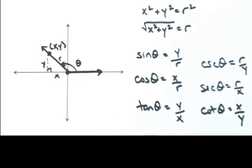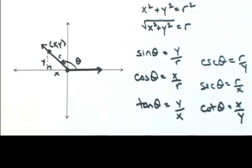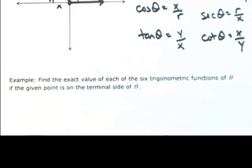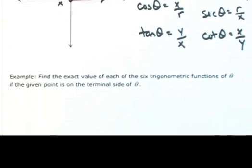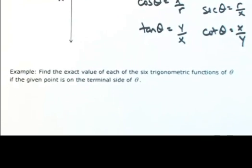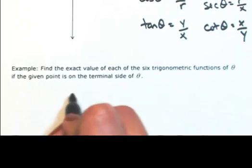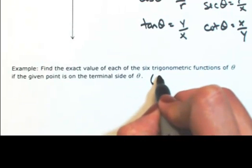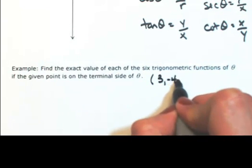So let's try an example, let's find the six trig functions of theta, and I'll give you a point on the terminal side. So let's find the exact value of each of these. So let's say the point is 3, negative 4.